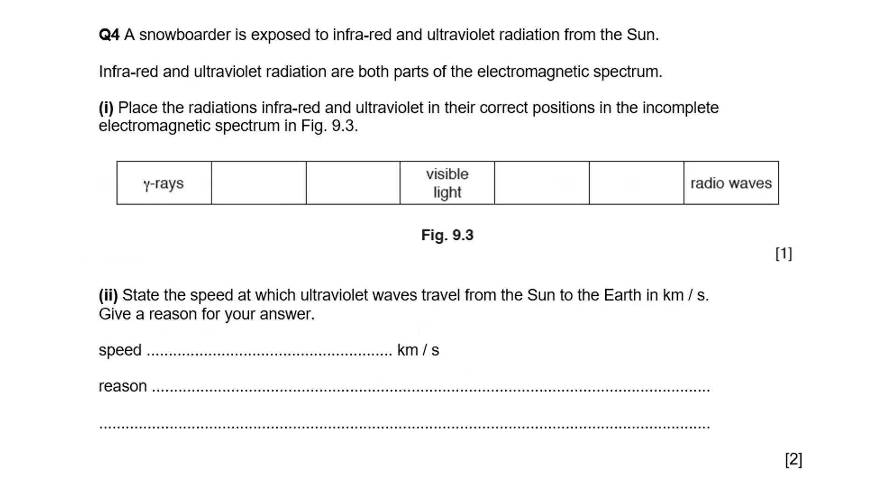A snowboarder is exposed to infrared and ultraviolet radiation, both parts of the electromagnetic spectrum. Put infrared and ultraviolet in their correct positions. Ultraviolet is higher frequency than the visible or the violet end. Infrared is at the red lower frequency end of the spectrum. State the speed at which ultraviolet waves travel in kilometers per second. It's three times ten to the five because there's a thousand meters in a kilometer. The reason is because they're all electromagnetic waves which all travel at three times ten to the eight in a vacuum.